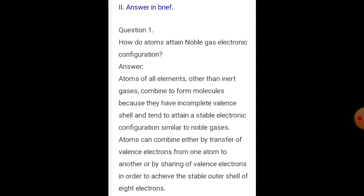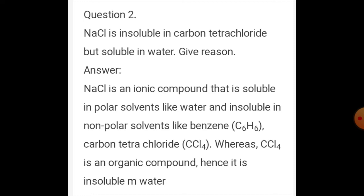Atoms can combine either by transfer of valence electrons from one atom to another, or by sharing of valence electrons, in order to achieve the stable outer shell of 8 electrons. Question number 2: NaCl is insoluble in carbon tetrachloride but soluble in water — give reason. NaCl is an ionic compound, soluble in polar solvents. NaCl dissociates into Na+ and Cl- ions. This is why NaCl dissolves in water but is insoluble in non-polar solvents like carbon tetrachloride and benzene.